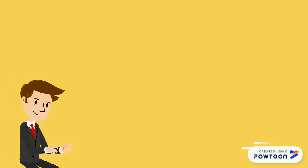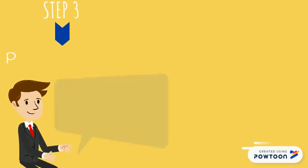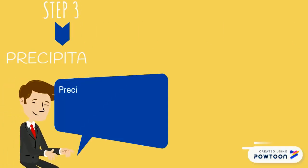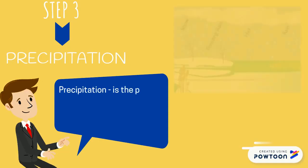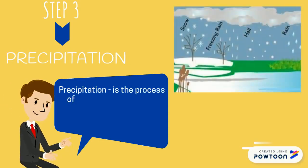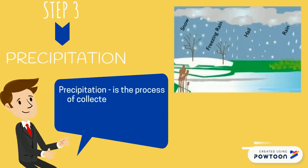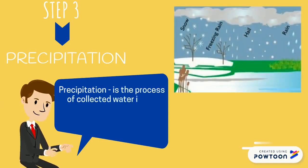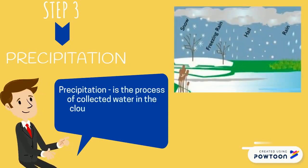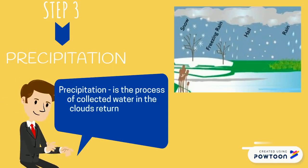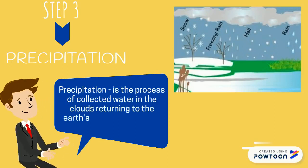Step 3: Precipitation. Precipitation is the process of collected water in the clouds returning to the earth's surface, whether in rain, sleet, hail, or snow.